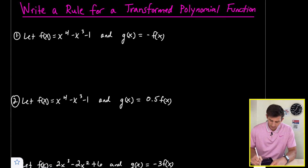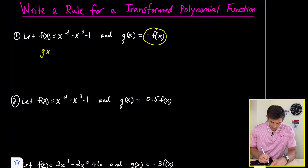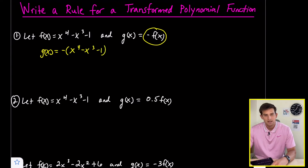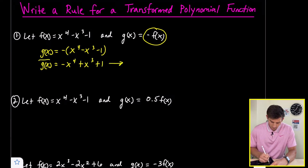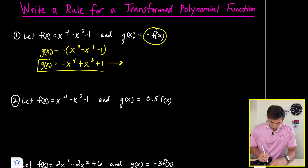The opposite of f of x means g of x is equal to the opposite of x to the fourth minus x to the third minus one. Now we can just distribute that negative, so we end up with g of x being negative x to the fourth plus x to the third plus one. That would be our transformed polynomial function.